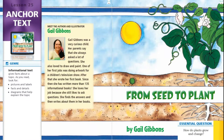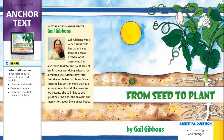Hi second graders! If you have your anthology, go ahead and follow along as we read our story 'From Seed to Plant' by Gail Gibbons. If you don't have your anthology, just follow along with the highlighted words on the screen. The genre or type of story is informational text. Remember, informational text gives facts about a topic.